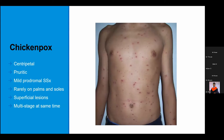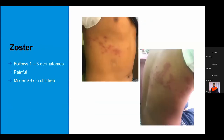But in monkeypox, all lesions are at the same stage. Then there is herpes zoster, which is easier to diagnose as it follows a dermatomal distribution. The key point is that it is painful, though symptoms are milder in children. Vaccinia is a reaction to a smallpox vaccine — very few people get vaccinated against smallpox now. It is a short-lived generalized rash and follows a history of smallpox vaccination.